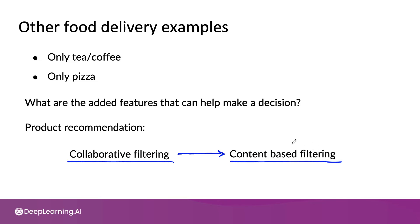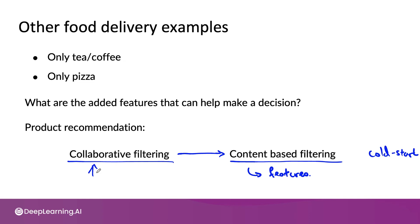The advantage of content-based filtering is that even if there's a new restaurant or a new product that hardly anyone else has liked, by actually looking at the description of the restaurant rather than just looking at who else likes it, you can more quickly make good recommendations. This is sometimes also called the cold start problem — how do you recommend a brand new product that almost no one else has purchased or liked? Unlike collaborative filtering, which requires a bunch of people to look at the product before it can decide whether a new user should be recommended it.